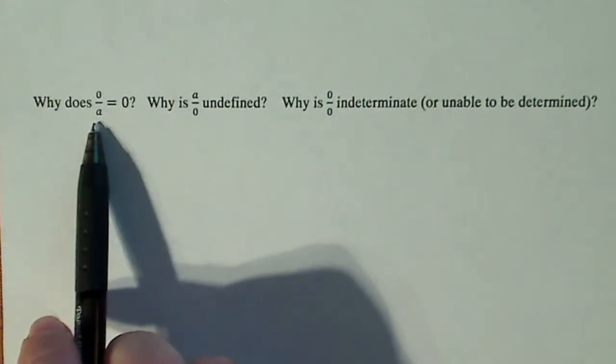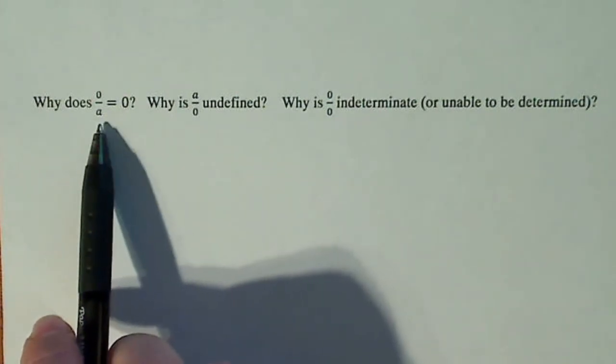Now remember A can be any number: 2, 3, 17, minus 32, pi. 0 over any real number is 0.